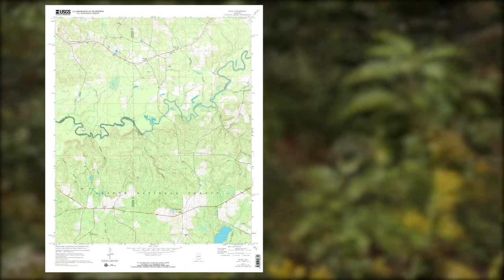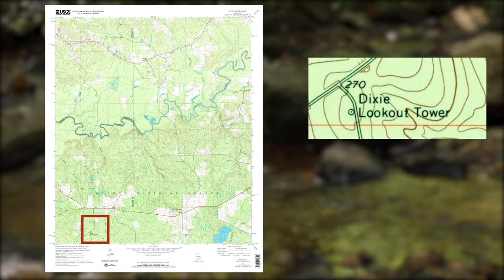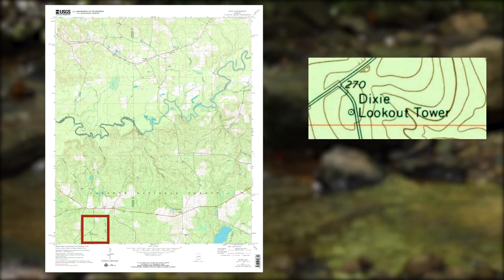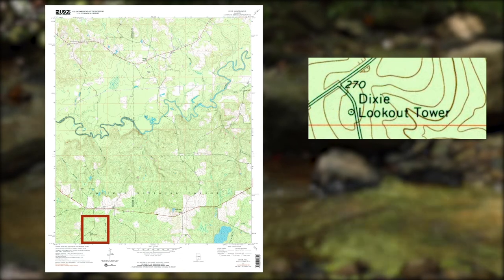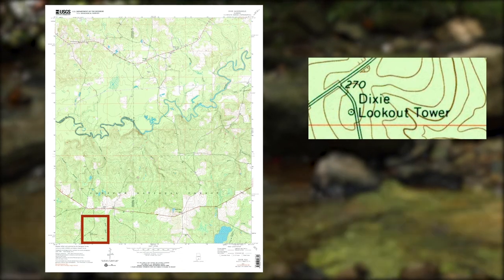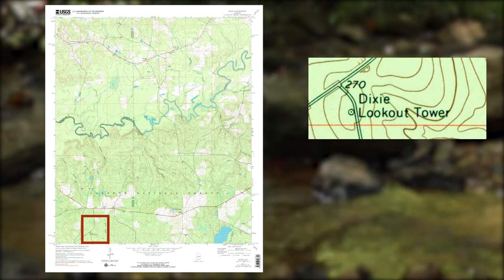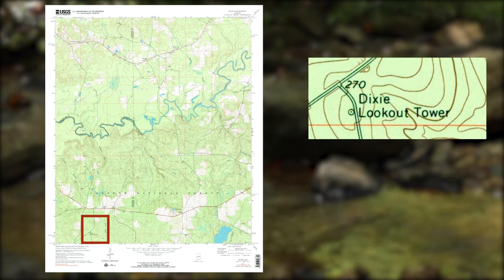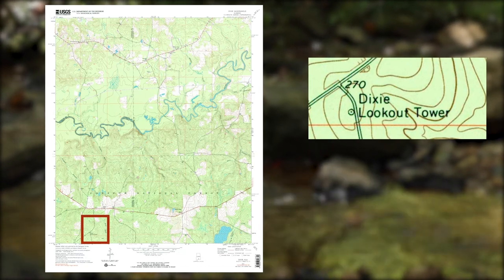Let's determine the legal description of the Dixie Lookout Tower on the Dixie USGS topo map. Please note that legal descriptions on deeds will be much more specific than what is shown here, but it is best to start by understanding how to interpret the basic structure of the GLO system.